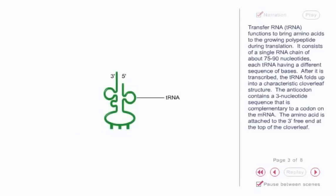Transfer RNA functions to bring amino acids to the growing polypeptide during translation. It consists of a single RNA chain of about 75 to 90 nucleotides, each tRNA having a different sequence of bases. After it is transcribed, the tRNA folds up into a characteristic cloverleaf structure.